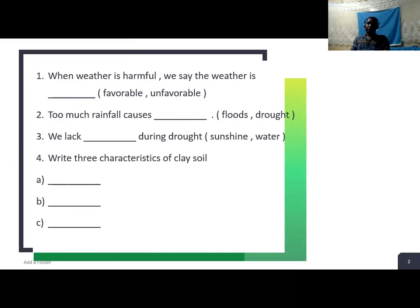Question 2. Too much rain causes dash. If it rains so much, what does it cause? Is it drought or flood? You write for me the correct answer.